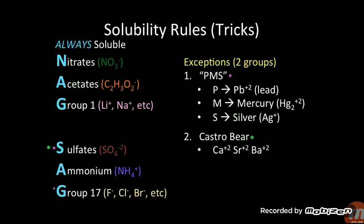Moving to the lower right side, we have the word Castro Beer, representing Ca²⁺, Sr²⁺, and Ba²⁺ — calcium, strontium, and barium. Castro Beer has a green asterisk, which is defined by the sulfate compound on the lower left side. So if sulfate is forming a compound with calcium, strontium, or barium, the compound made will not be soluble in water.